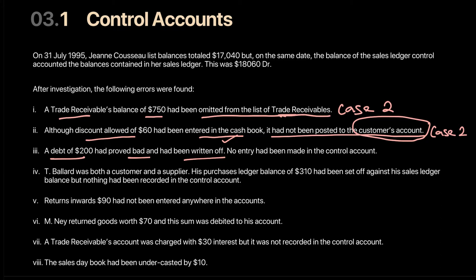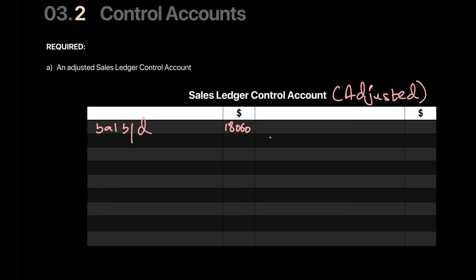Error 3: A bad debt of 200 has proved bad and been written off, but no entry has been made in the control account. This is Case 1 — it's missing from the control account only, as it was entered in individual accounts but not in the day book. We enter it in the adjusted sales ledger control account. Bad debt goes on the credit side, reducing trade receivables by 200.